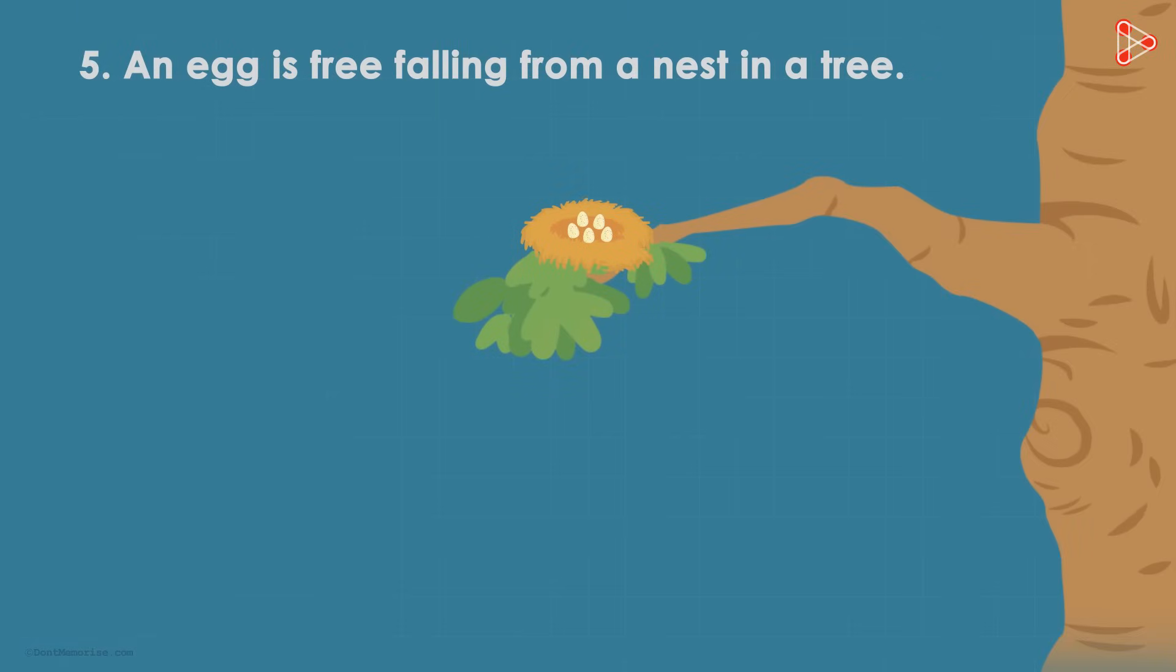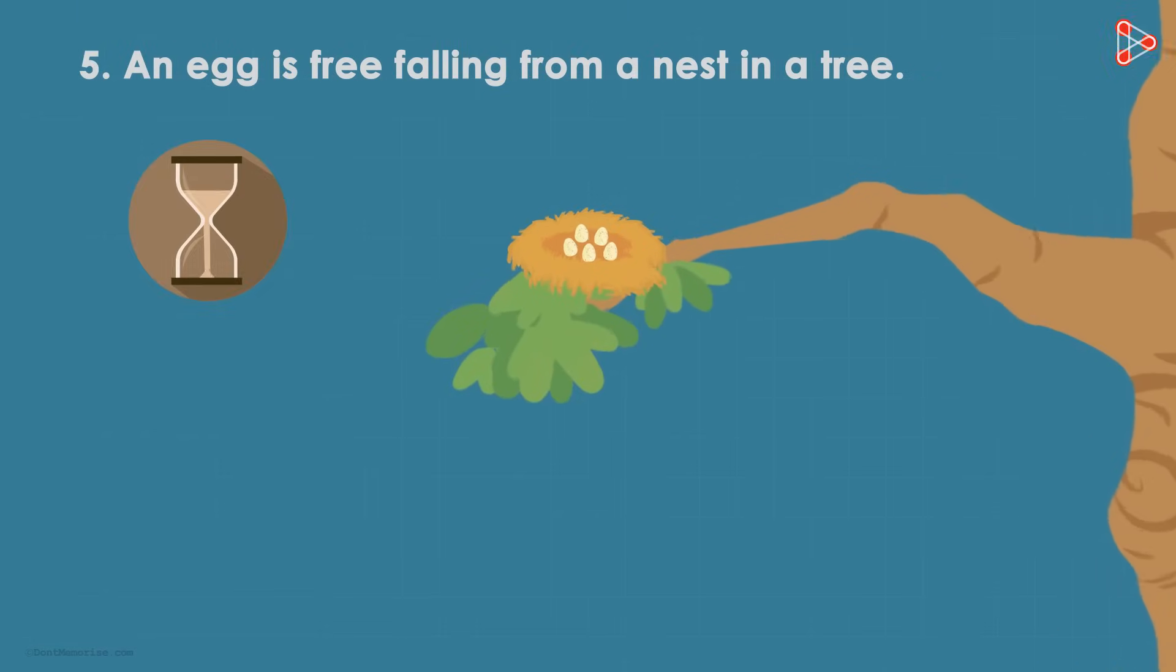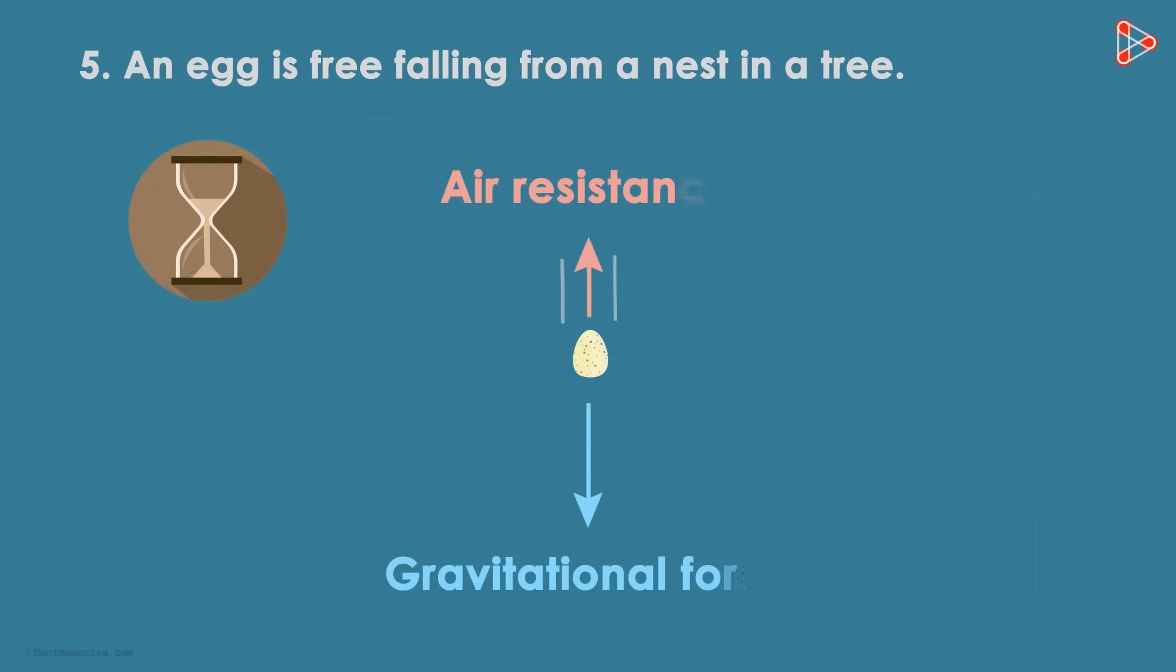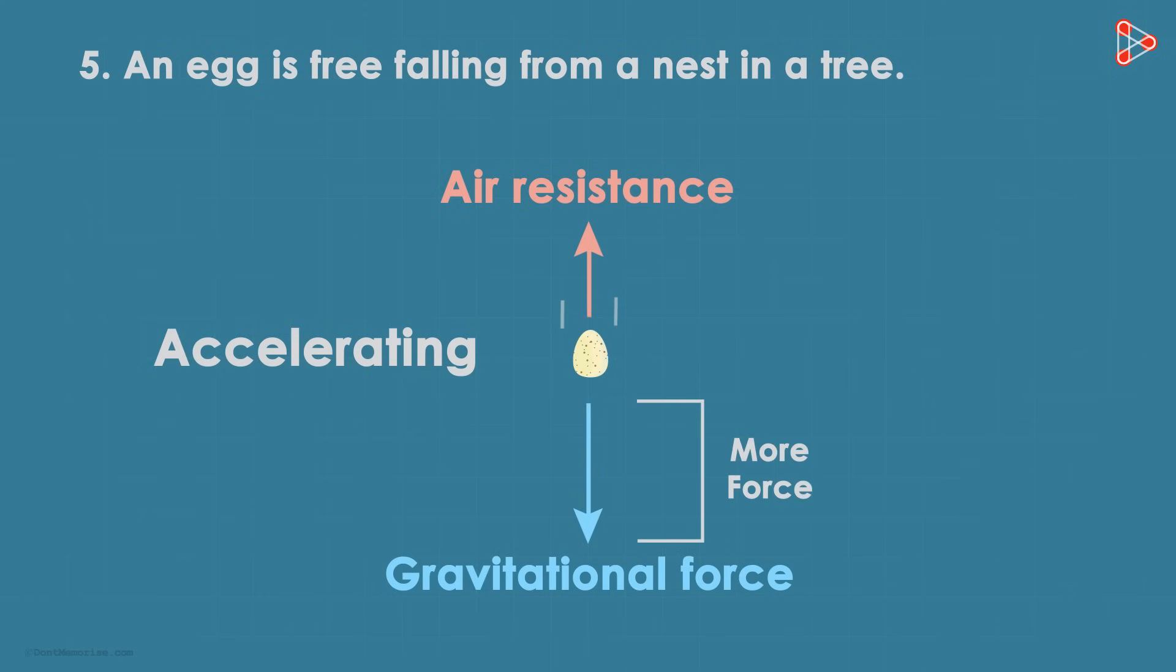I want you to get the fifth one right now. This is how it will look. As it's free falling, it means it's accelerating. So the magnitude of the gravitational force will be more than the magnitude of the air resistance force.